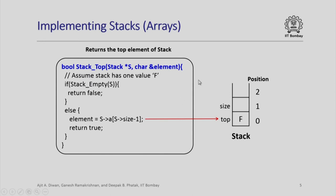It will return true if size equals 0, meaning the stack is empty, and true if size equals max size, meaning the stack is full. Let us look at the implementation of a function which examines the top element of the stack. Assume the stack has just one value 'f'. The boolean function stack_top has two parameters: stack star s, and char and element, which is returned by reference. If the stack is empty, it returns false. Otherwise, element is set to s[size-1]. Since the only element is at position zero and size equals 1, the element 'f' is returned and the function returns true. Note that size does not change, as this function merely examines the top element.